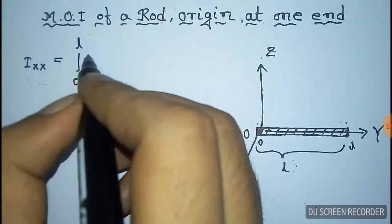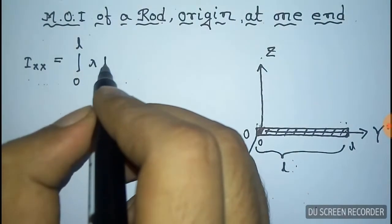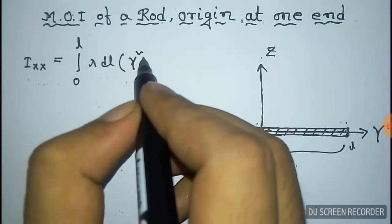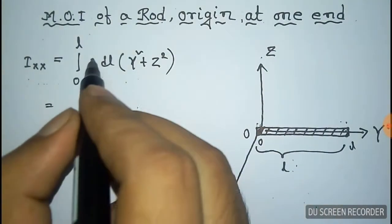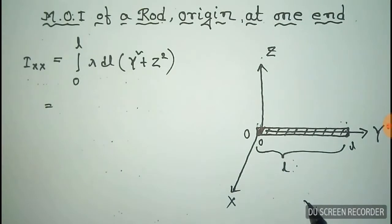integration 0 to L lambda DL times y square plus z square. This is the formula and here lambda is the mass per unit length, that is m by L.